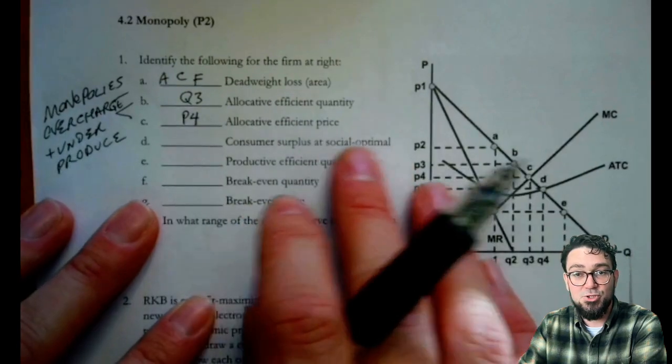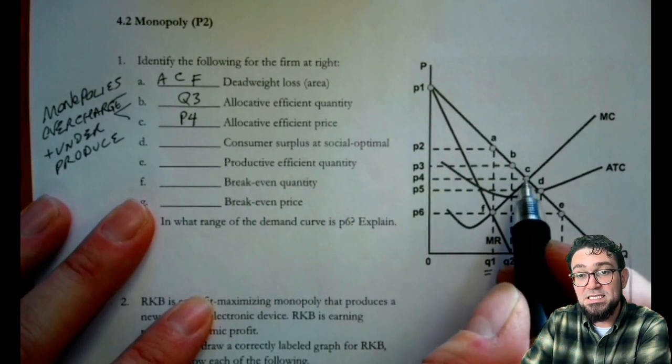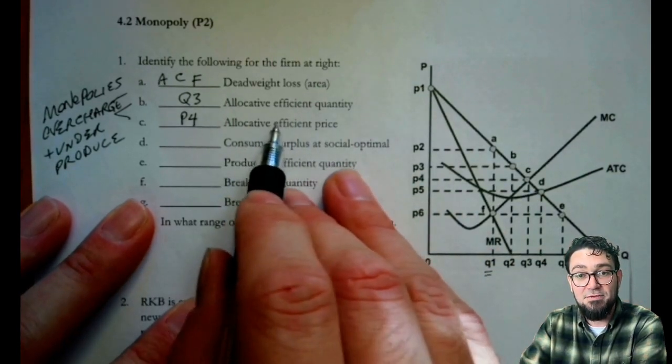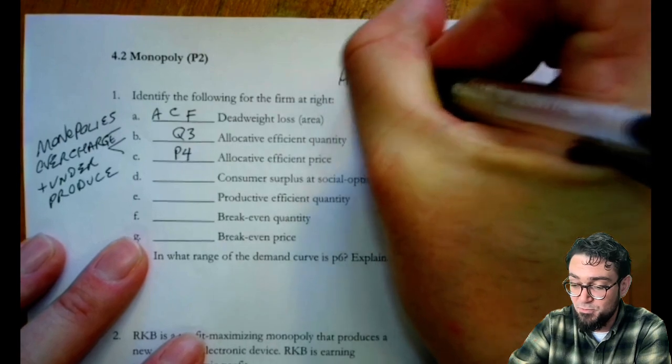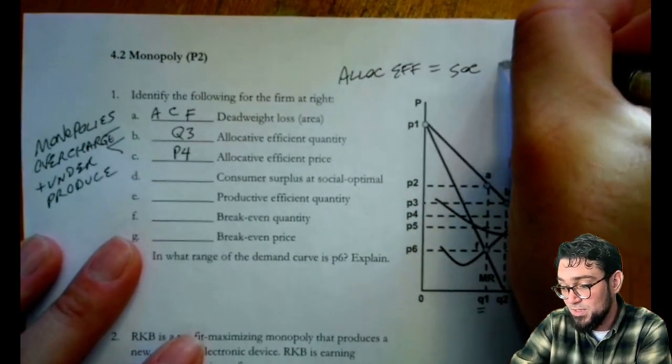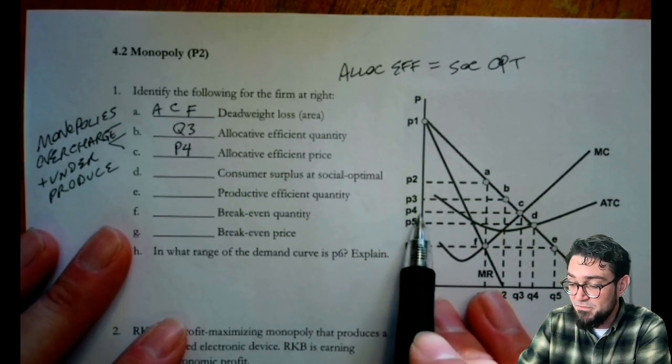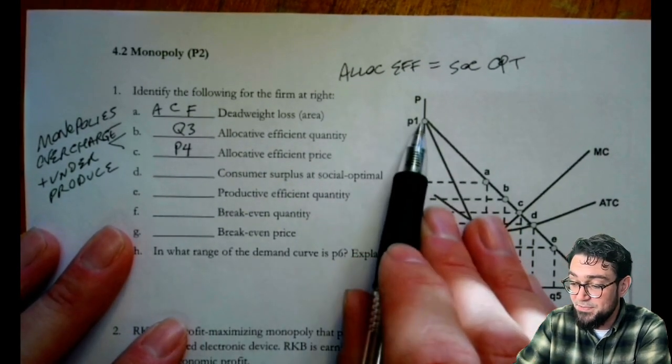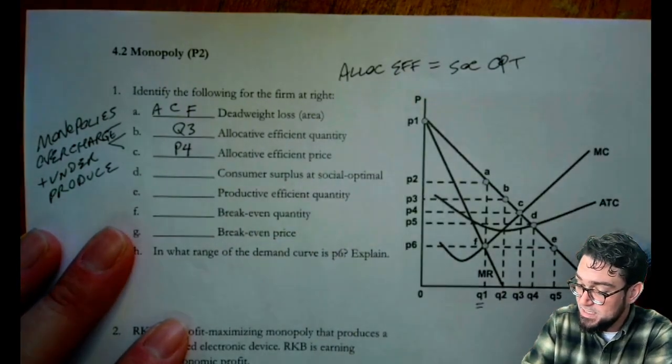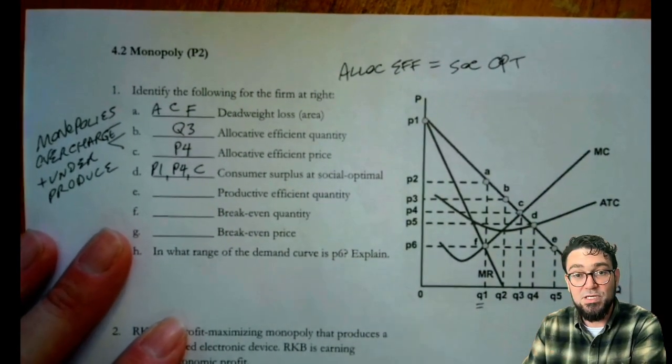Consumer surplus at the socially optimal. So this is saying if this market were competitive, what would be the surplus? We have this point C would be where their quantity would be at Q3 if they were socially optimal or allocatively efficient. Those two things mean the same thing. Allocative efficient equals socially optimal. The surplus would start then at P4 for consumers, P4 all the way to C and then up here to P1. So that great big triangle would all be consumer surplus. So I'm going to use P1, P4, and then all the way over to C.